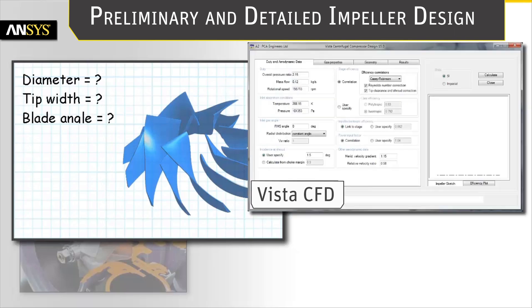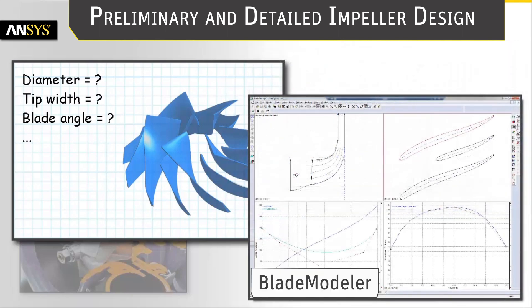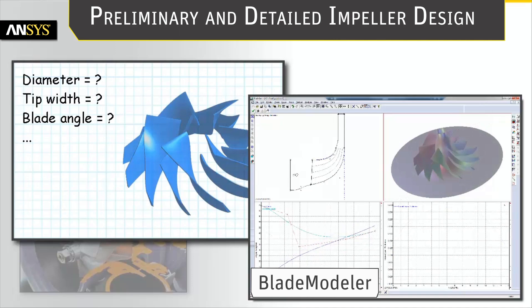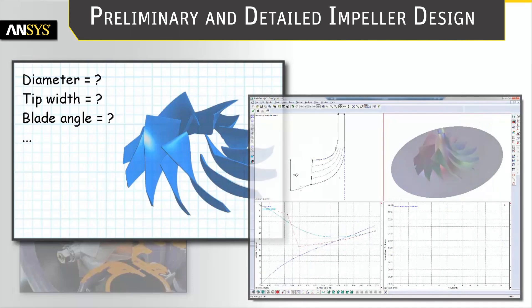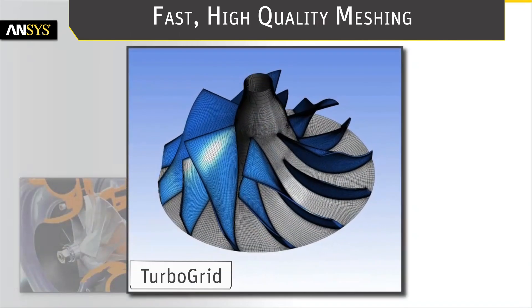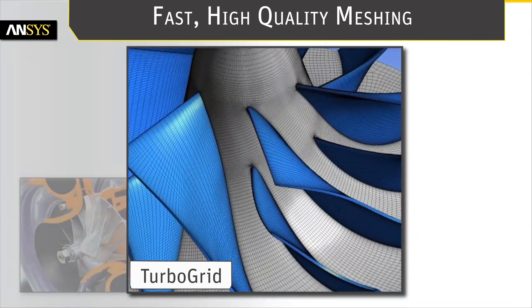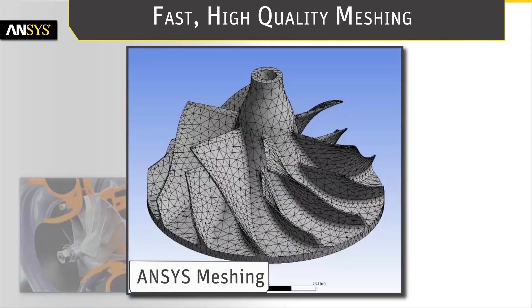ANSYS VISTA CCD creates an initial 3D impeller design based on the target aerodynamic requirements. ANSYS Blade Modeler provides blade-specific CAD capabilities to enhance the 3D impeller geometry. ANSYS TurboGrid and ANSYS Meshing deliver fast, high-quality meshes for aerodynamic and mechanical simulation.